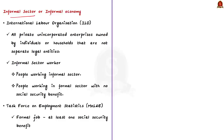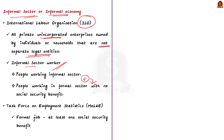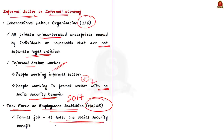What is an informal economy or informal sector? According to the International Labour Organization, that is ILO, the informal sector consists of all private unincorporated enterprises owned by individuals or households that are not separate legal entities. The people working in this sector are called informal sector workers. In India, according to the report of the Task Force on Employment Statistics from the Ministry of Labour and Employment in the year 2017, a job that offers access to at least one social security benefit is defined as the formal job.